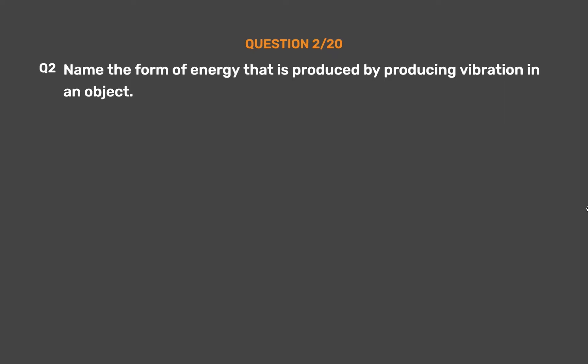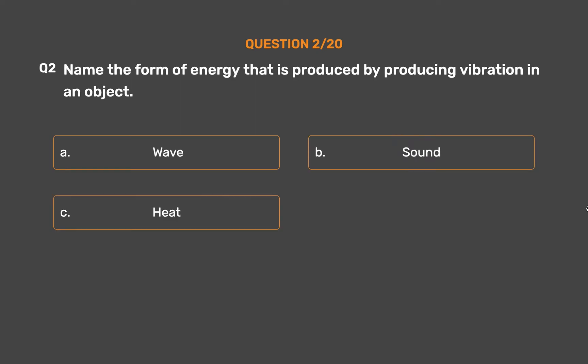Question number 2. Name the form of energy that is produced by producing vibration in an object. Option A, Wave; Option B, Sound; Option C, Heat; Option D, None of these.